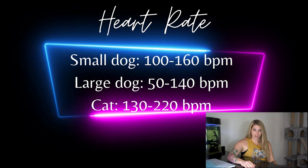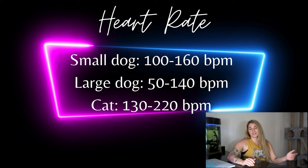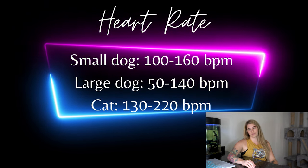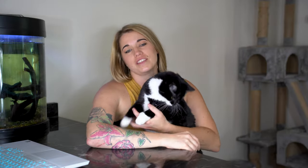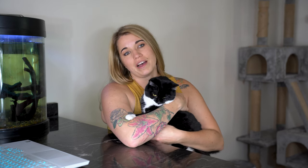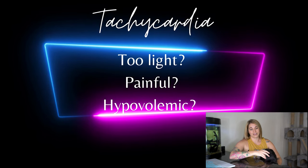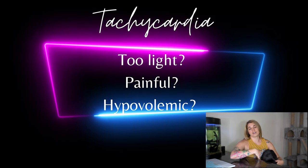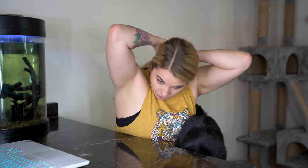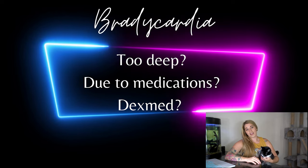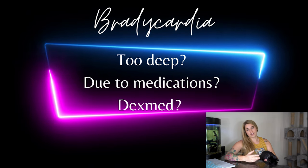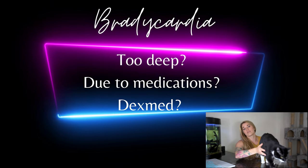For large breed dogs, an acceptable heart rate will be somewhere between 50 to 140 beats per minute. In small dogs, it'll be around 100 to 160, whereas in cats it'll be between 130 and 220. Tachycardia can be a sign that our patient is in too light of an anesthetic plane, whereas bradycardia can be a sign that our patient is too deep. We can address tachycardia by increasing anesthetic depth, adding additional pain medications, or if it's secondary to hypovolemia, by administering a fluid bolus. Bradycardia can be addressed by lightening the anesthetic plane, reducing anesthetic gas or CRIs, or reversing opioids or dexmedetomidine.